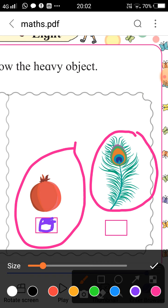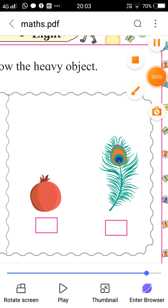Peacock feather compared to pomegranate is lighter. At your home if there is a peacock feather and a pomegranate fruit, keep both in your hands and feel the difference. Okay.